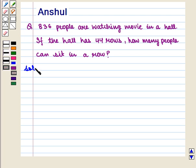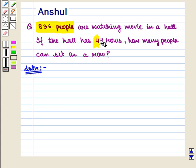Let us start with the solution of the given question. Here we are given that 836 people are watching a movie in a hall and this hall has 44 rows.